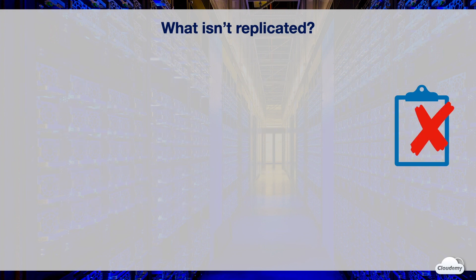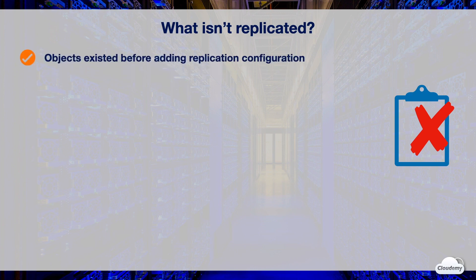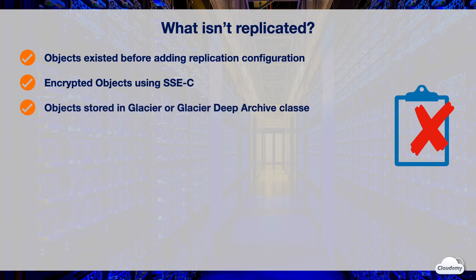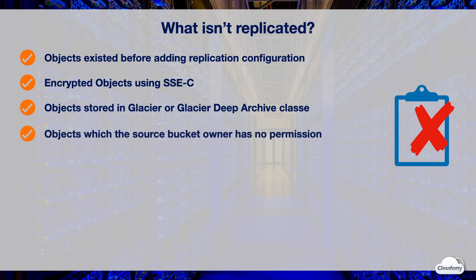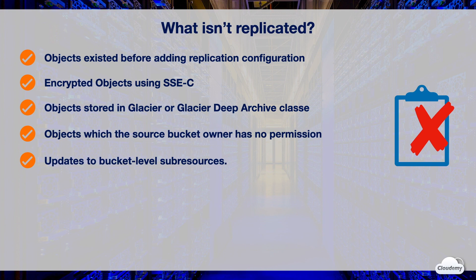The following items are not replicated by S3 replication. S3 doesn't replicate object versions that existed before you add the replication configuration to the bucket. Encrypted objects using customer-provided encryption keys won't be replicated. S3 doesn't replicate objects stored in S3 Glacier or Glacier Deep Archive storage classes. S3 also doesn't replicate objects for which the source bucket owner doesn't have permissions. Updates made to bucket-level subresources won't be replicated — for instance, changes to lifecycle configuration or bucket notifications are not applied to the destination bucket.